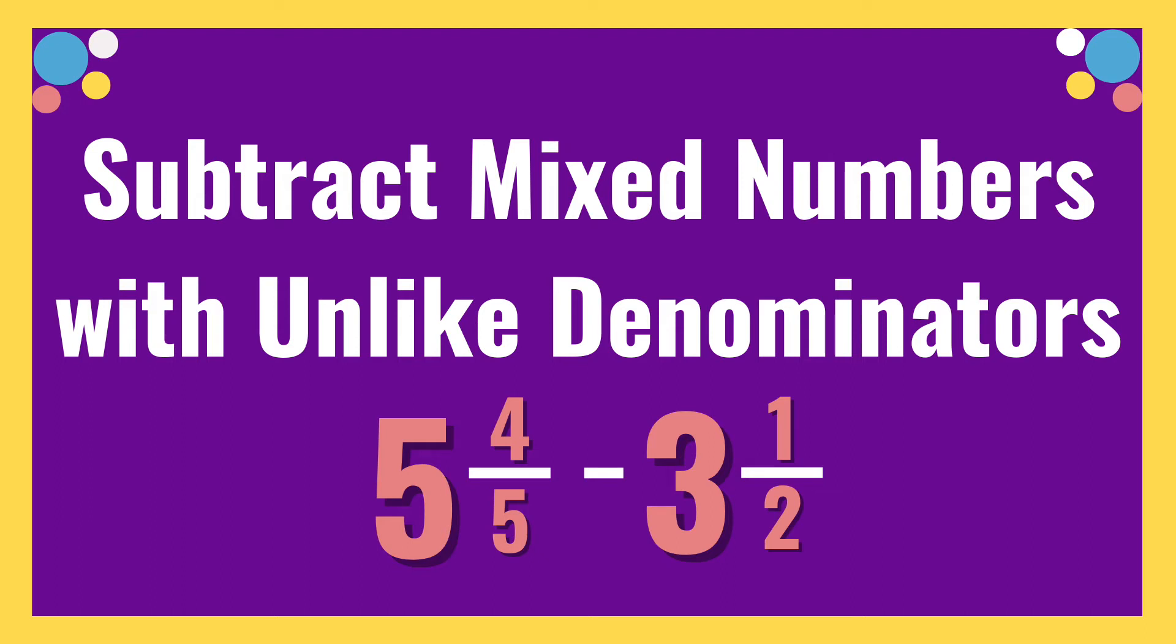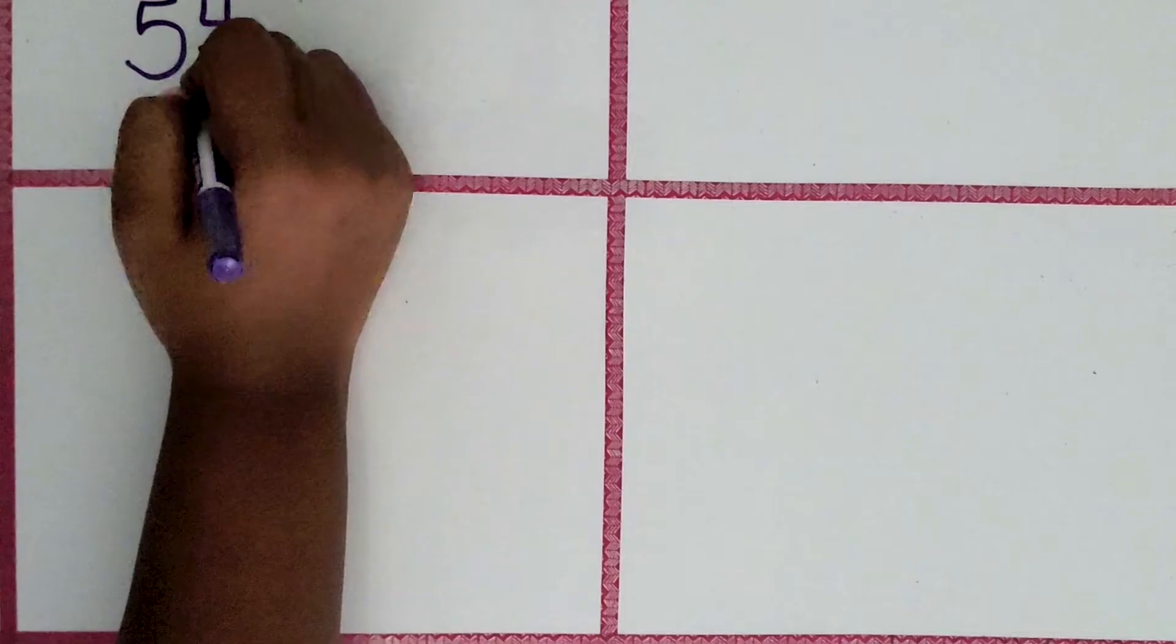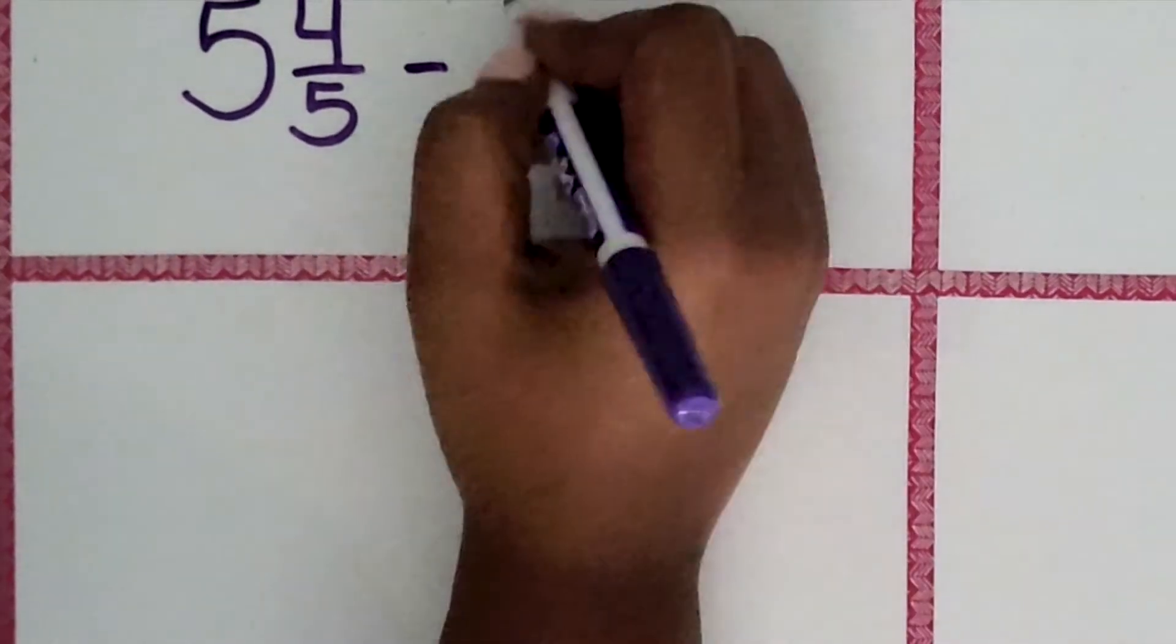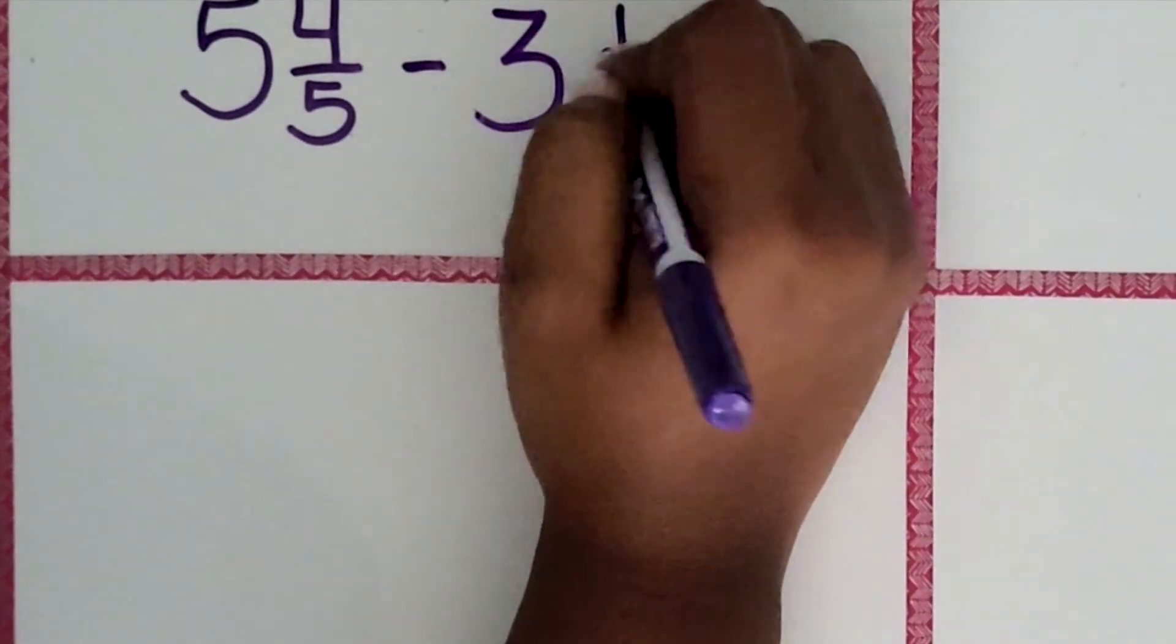So we have 5 and 4 fifths. We're going to subtract 3 and 1 half.